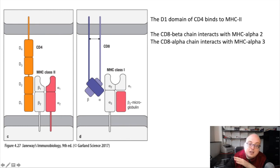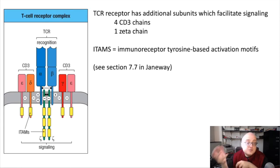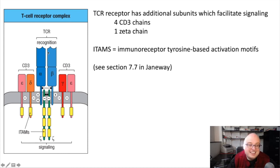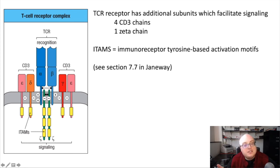Now that we've talked about the MHC molecule and the co-receptor, let's talk about the T-cell receptor a little bit more. We introduced the structure of the T-cell receptor itself—it has alpha and beta chains and the antigen binding domain. But the T-cell receptor has additional partners it needs in order to transmit a signal. The T-cell receptor proper is really only the alpha and beta chains, but often when we talk about the T-cell receptor, we use it as a broader term to include accessory proteins that it needs in order to signal.